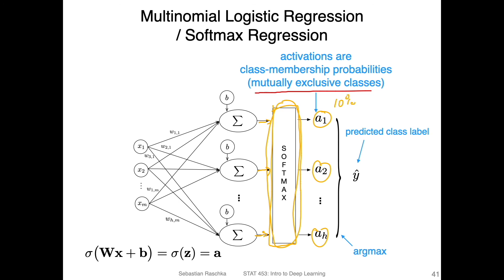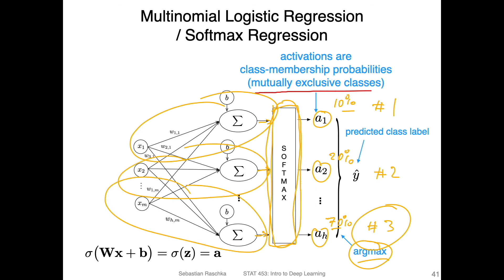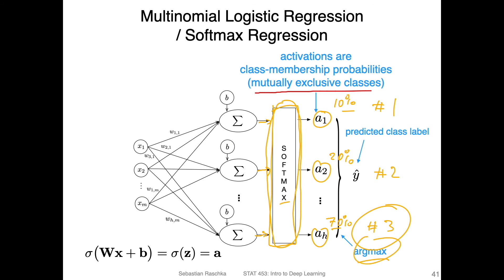For example, the first output might be 10% probability for class one, 20% for class two, and 70% for class three. To convert this to a class label, we take the argmax — the index position of the highest value. Scanning positions one, two, and three, the highest is 70% at position three, so this returns class label three. In the next videos, we will walk through softmax, argmax, and how we compute the loss function step by step.